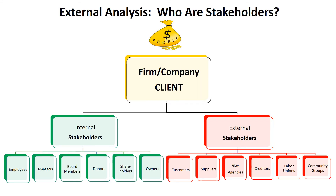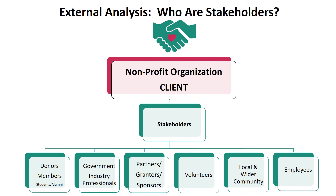The last part of the external analysis is reporting on your stakeholders. You need to examine them from both the internal stakeholders — like your employees, managers, and shareholders — as well as your external stakeholders like customers, suppliers, labor unions, and community groups. Each client will have their own unique set of stakeholders. Nonprofit institutions can vary greatly in size and depth and have their own set of stakeholders that includes members, donors, government and industry professionals, partners, grantors, sponsors, volunteers, the community, and the employees of the organization.